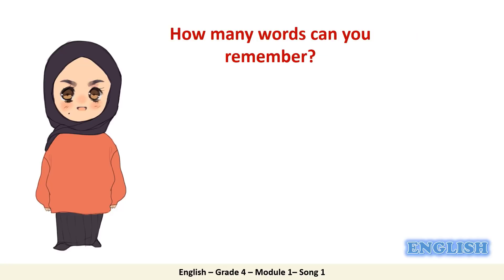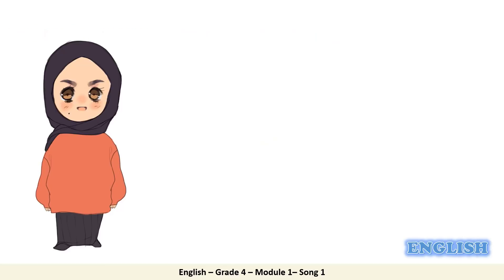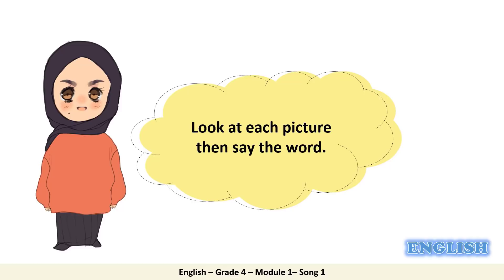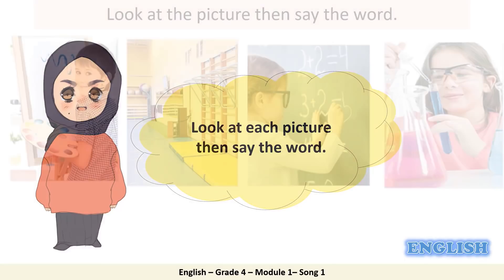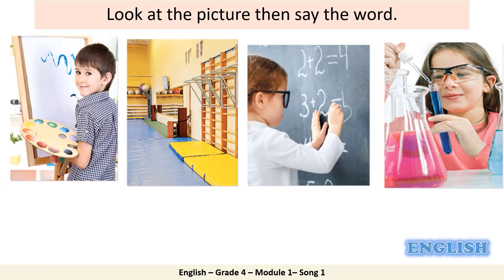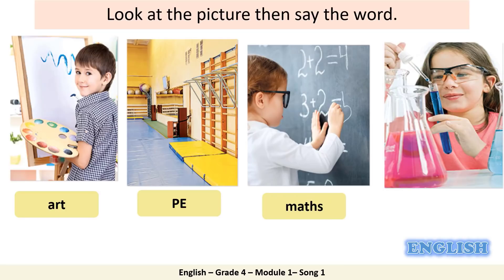Now let's have a small challenge. How many words can you remember? Look at each picture, then say the word. Are you ready? Let's start. Look at the first picture — can you remember the subject? That's correct. It is art. Repeat after me: Art. What about the next one? Excellent. It is PE. Repeat after me: PE. What about the third one? Excellent. It is maths. Repeat after me: Maths. What about the last one? Very good. It is science. Repeat after me: Science. Well done, everyone.